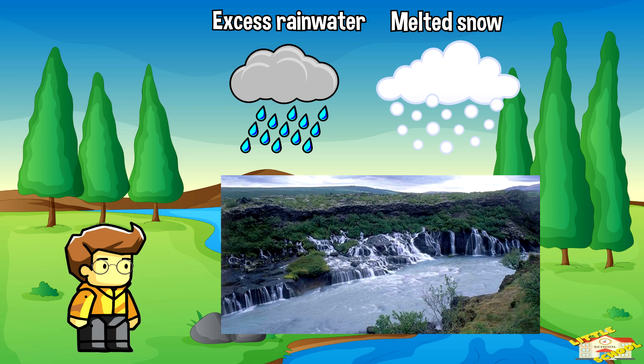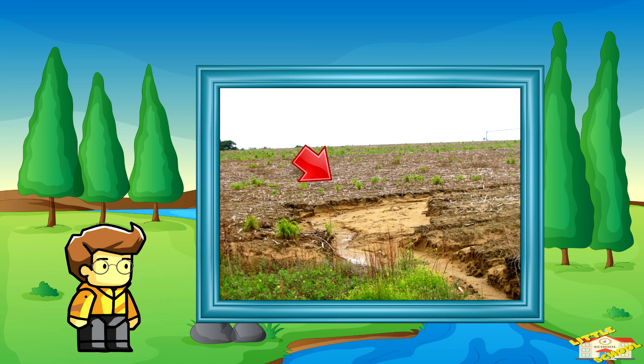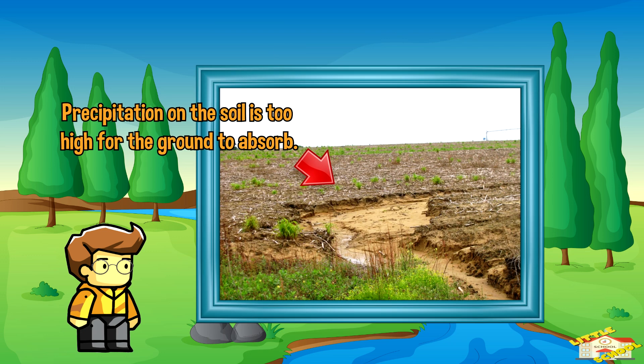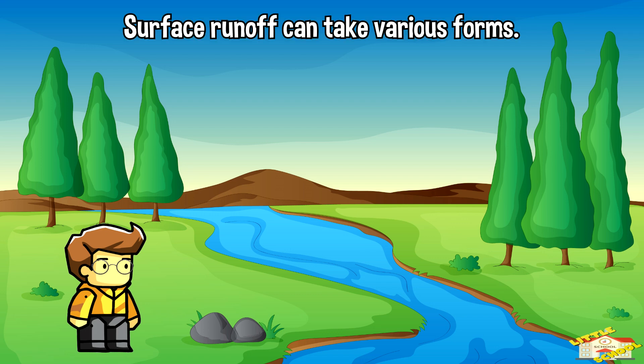Surface runoff is the movement of water over the land surface when excess rainwater, melted snow, or other sources of water do not infiltrate into the ground or evaporate. This runoff typically occurs when the rate of precipitation is too high for the ground to absorb.